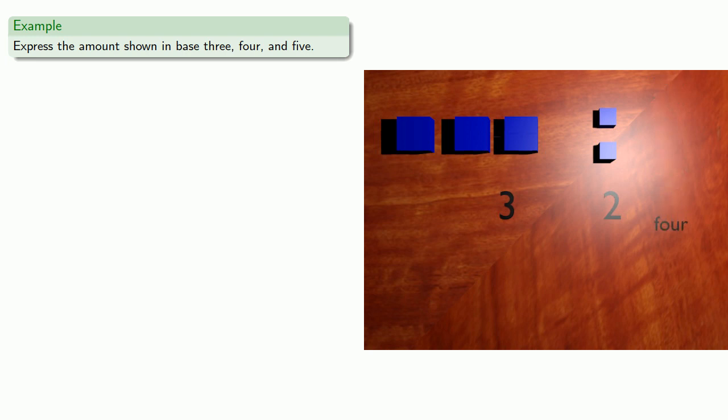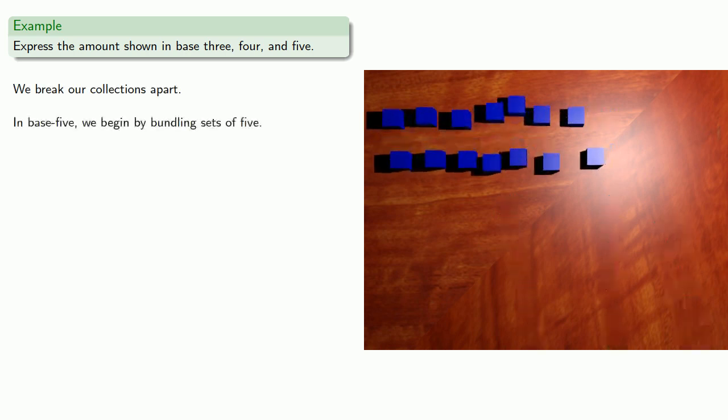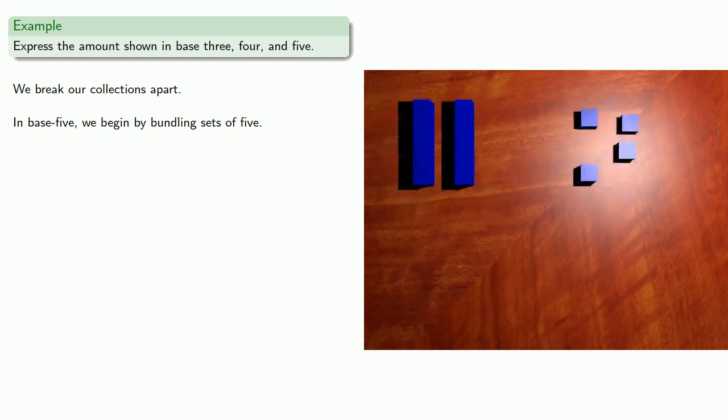Again, if we want to express the amount in base 5, we'll break our collections apart. And in base 5, we begin by bundling sets of 5. So arithmetic is bookkeeping, and we have 2 medium, 4 small, and so the amount shown is 2, 4, base 5.